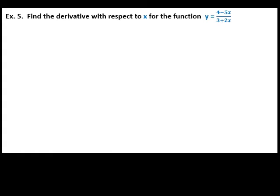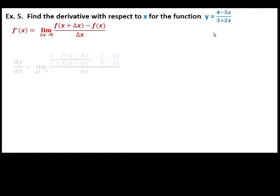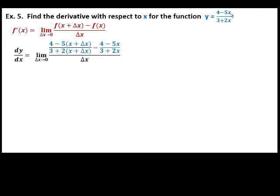Next example: find the derivative with respect to x for the function y equals 4 minus 5x all over 3 plus 2x. Starting again with the definition of the derivative, we replace x. This x is replaced with x plus delta x — in this denominator as well — minus the original function, all over delta x. Perform the operation on the numerator.